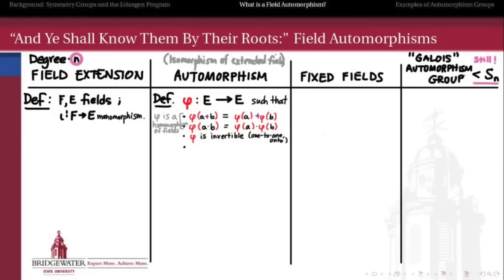So phi has to be one-to-one and onto, making it an isomorphism of fields. But there's one more criterion: we're interested in those automorphisms of e, the extended field, such that on the base field f the automorphism is trivial. In other words, every element of the base field itself, phi doesn't do anything to — it leaves it in place. This is why we call phi an automorphism of e over f: when we say 'over f', we mean that f is not changing at all under this automorphism.